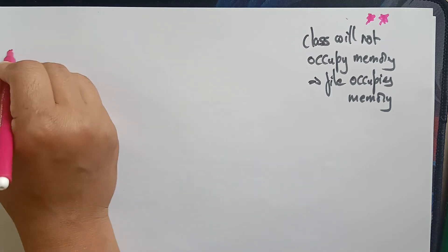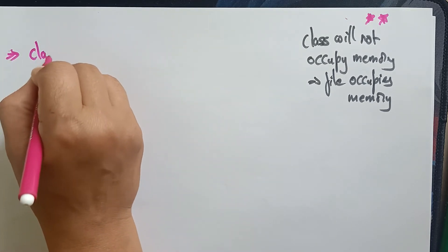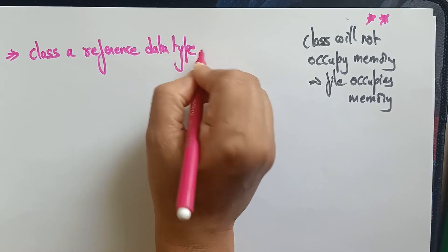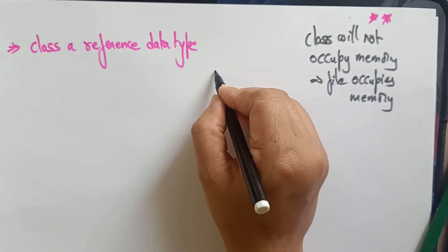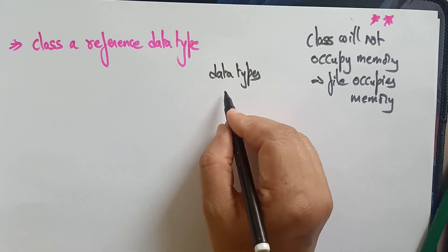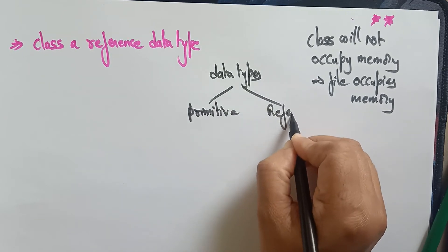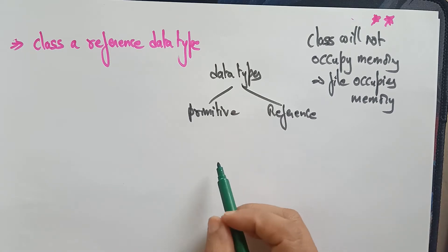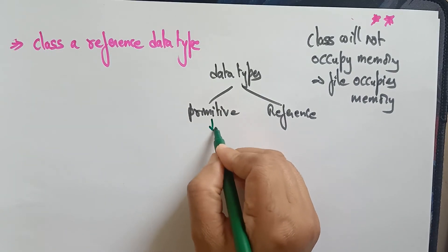A class is also called a reference data type. I said a class is a collection of variables and methods, and now I'm saying a class is a reference data type. Java data types are of two types: one is primitive data type and another is reference data type — I already explained this in a previous video.